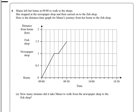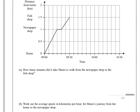Counting the blocks: 5, 10, 15, 20, 25, 30. So if it took her two of those blocks — because that's how long it's taken her to get from the newspaper shop to the fish and chip shop — two blocks means 5 times 2, which is 10 minutes.